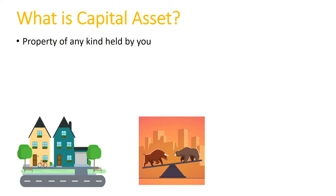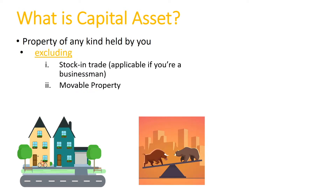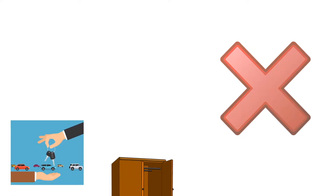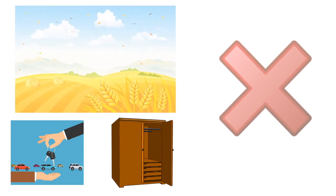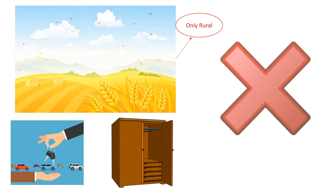But it has some exclusions as well: stock in trade and movable property. When we say movable property, things like your vehicle and furniture are excluded. But there is one immovable property excluded as well — that is rural agricultural land. The keyword here is rural. If you have urban agricultural land, then it is not excluded. So if you transfer anything for profit other than the above exclusions, be ready to pay capital gains tax.